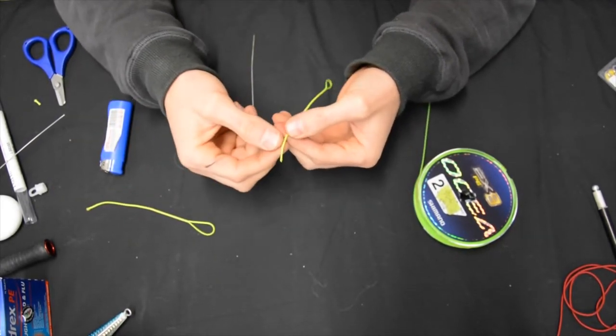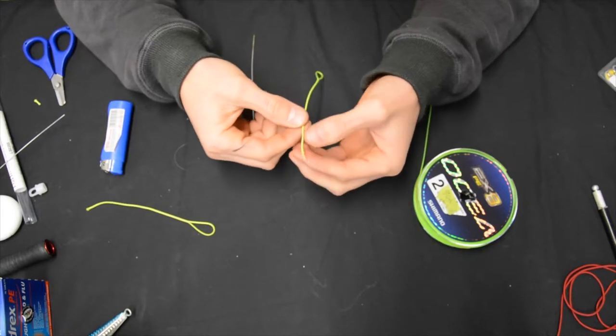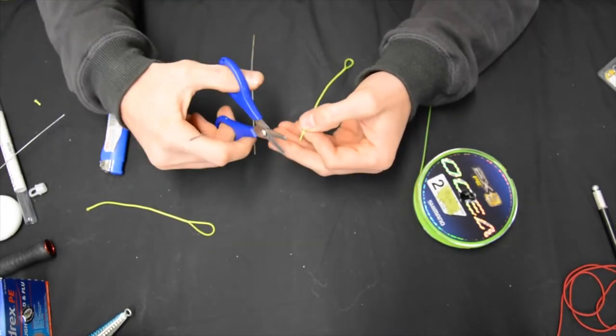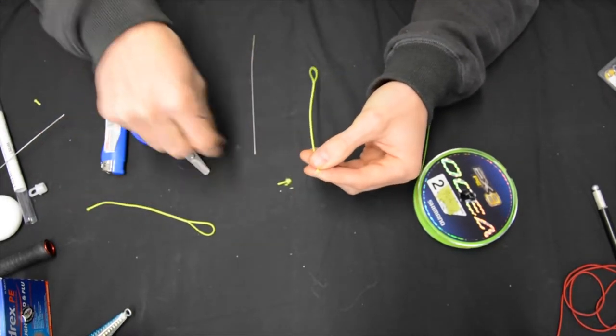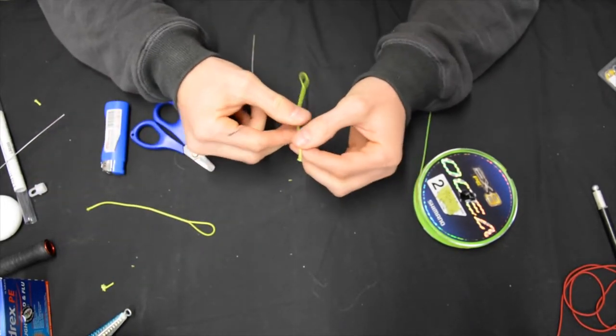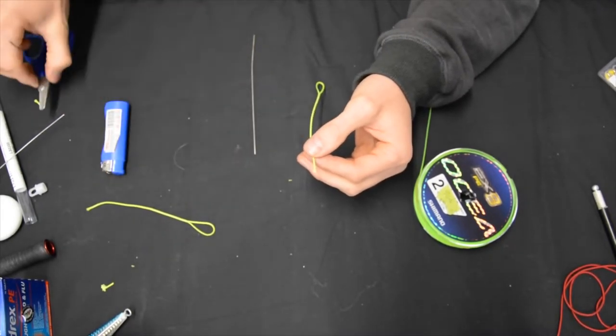Alright, so now I've got finished here, finished here. And so what I like to do is I like to trim the two flat. This is one I cut. I like to trim the two tag into the Dacron even.